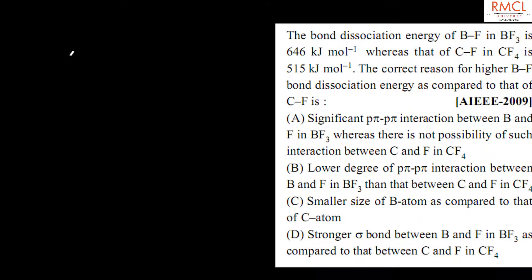The given question is from JEE 2009. The bond dissociation energy of BF in BF₃ is 646 kilojoule mol inverse, whereas that of CF in CF₄ is 515 kilojoule mol inverse. The question asks for the correct reason for the higher BF bond dissociation energy as compared to that of CF.